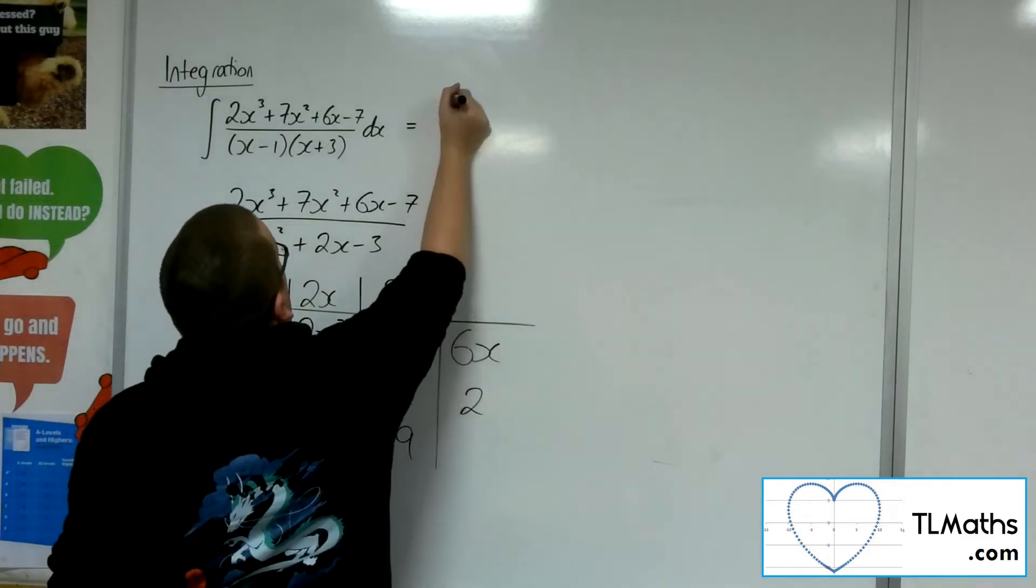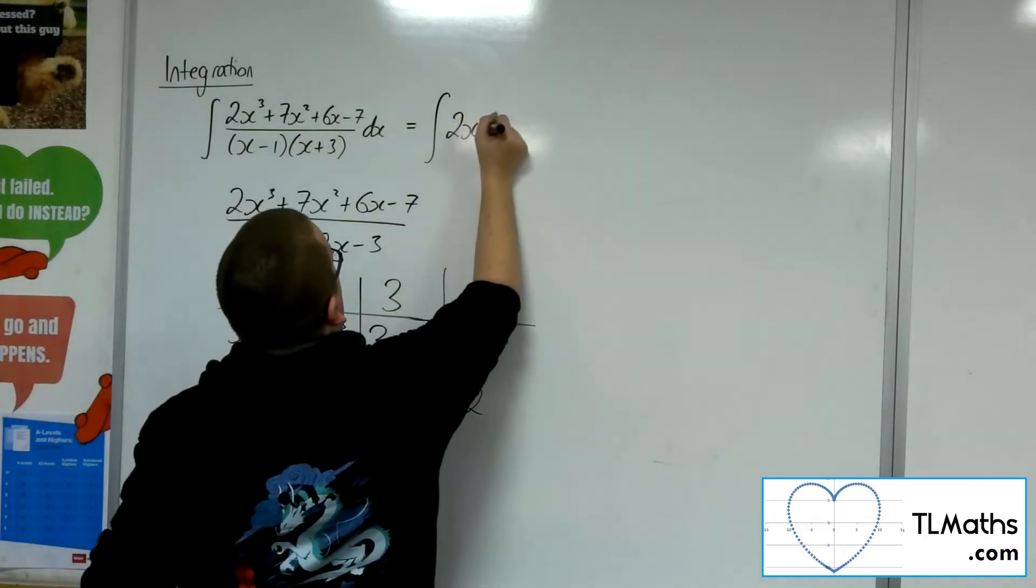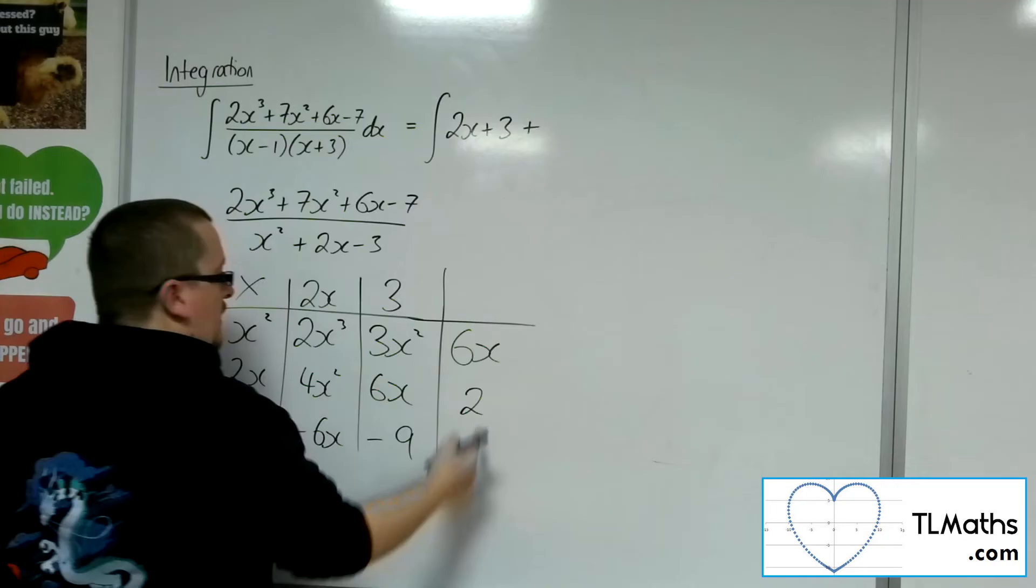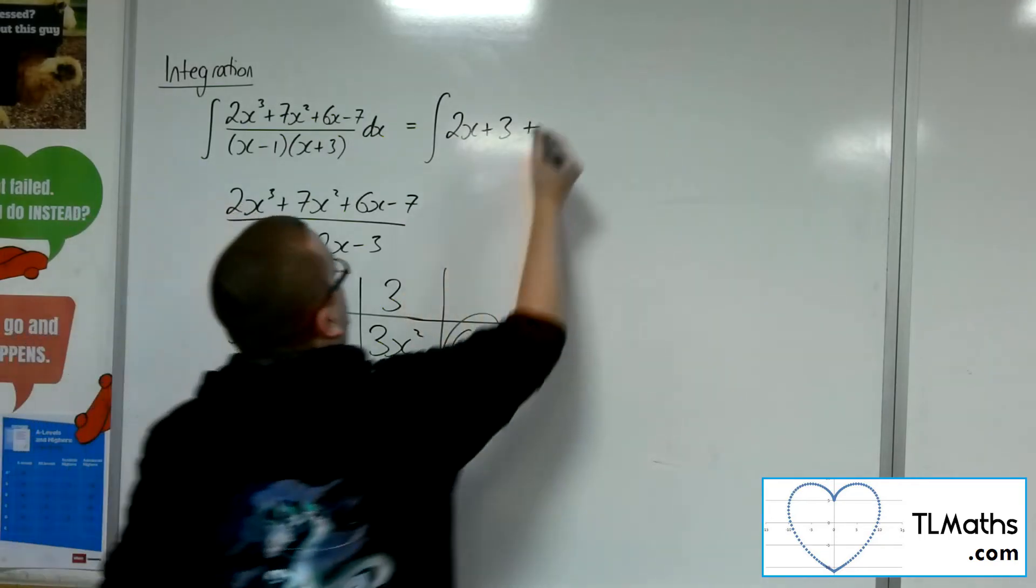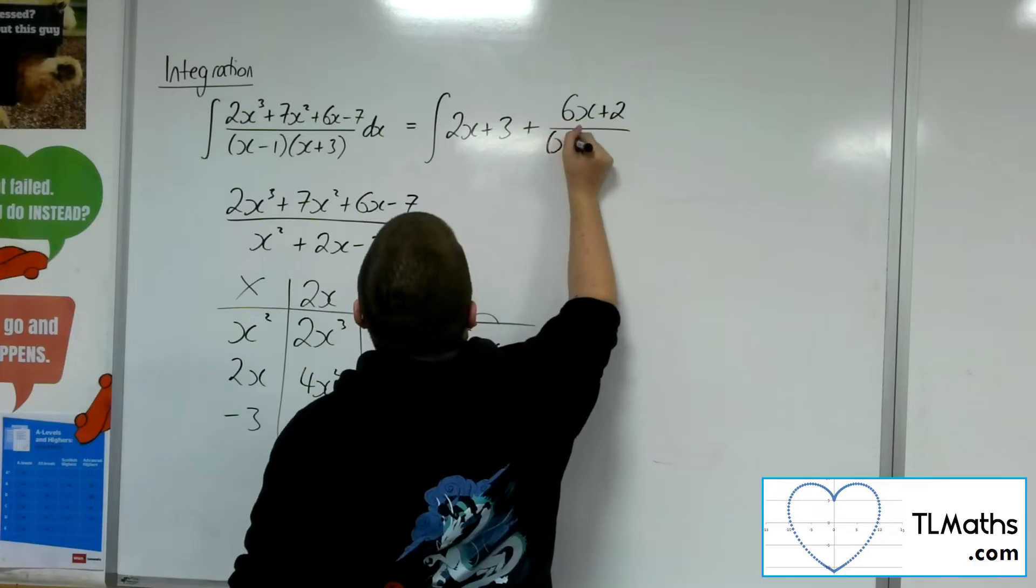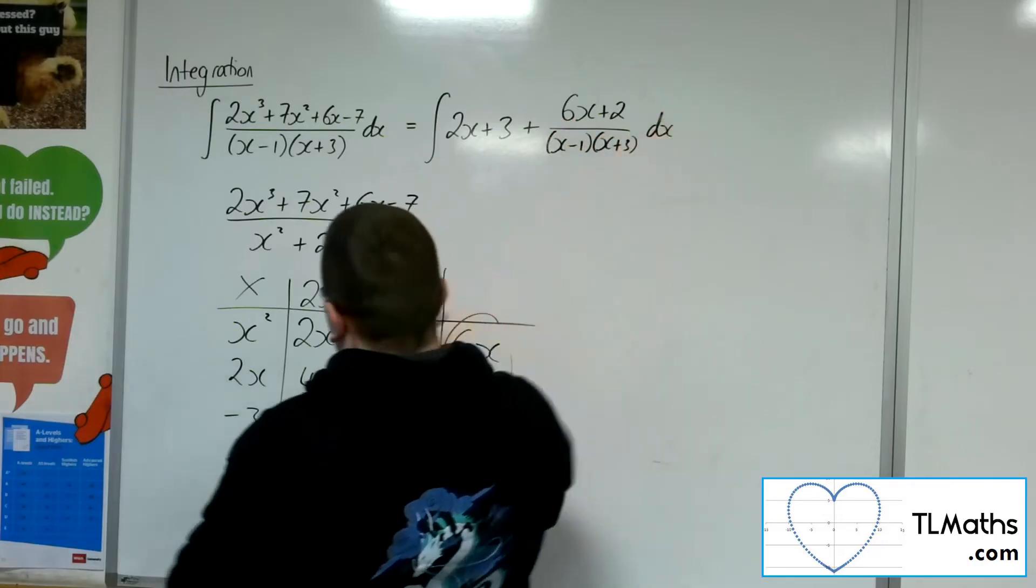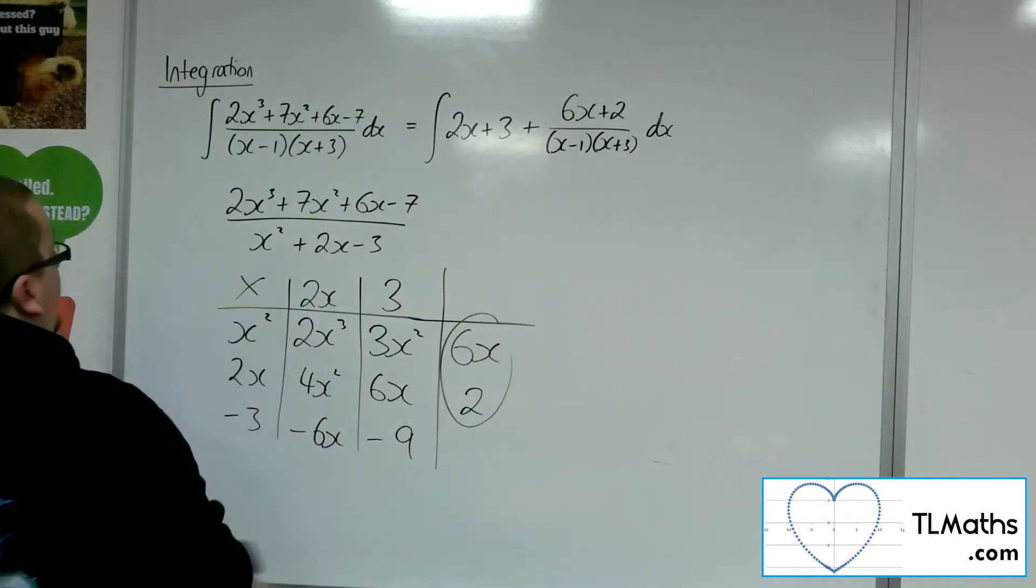So what I can now do is say this integral is the same as 2x plus 3 plus 6x plus 2, the remainder, over the denominator, the x minus 1, x plus 3. So I'm now in this position.